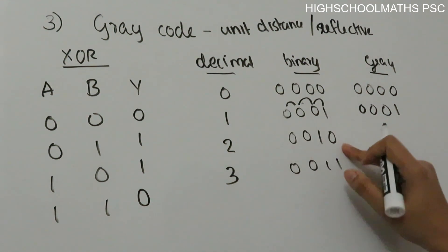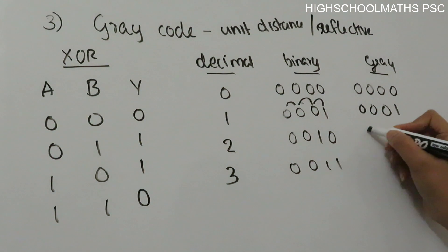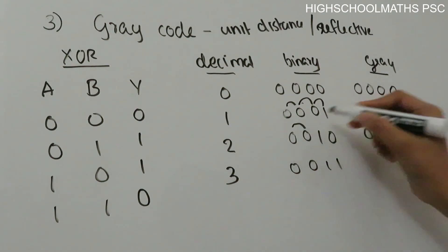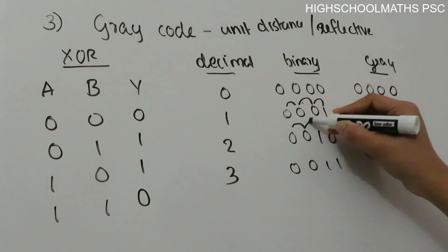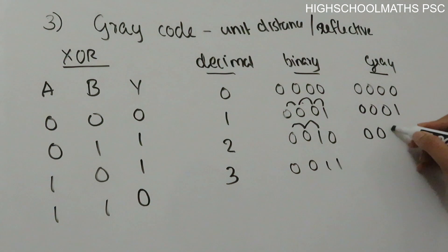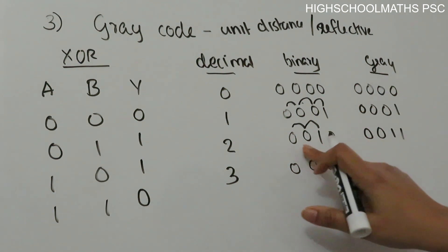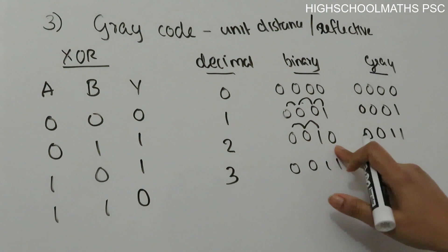For decimal 2: binary code is 0010. Gray code derivation: first bit 0, then 0 XOR 0 = 0, 0 XOR 1 = 1, 1 XOR 0 = 1 — Gray code is 0011. For decimal 3: binary 0011. Gray code: 0 XOR 0 = 0, 0 XOR 0 = 0, 1 XOR 1 = 0 — result is 0010.